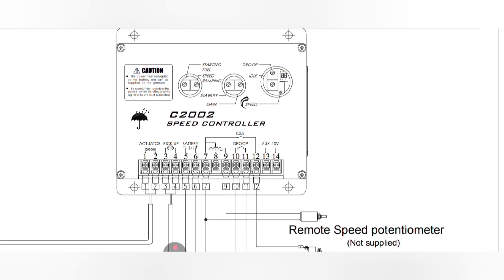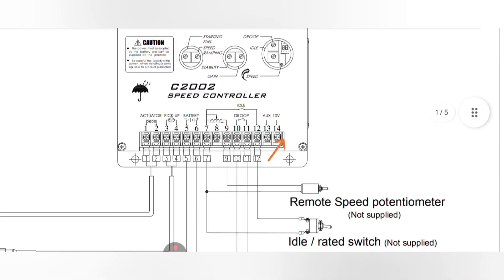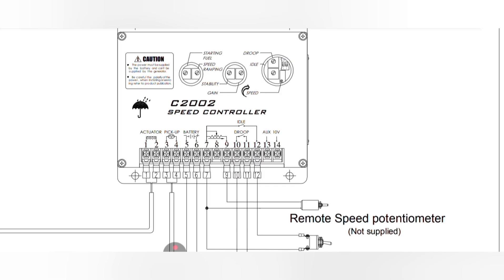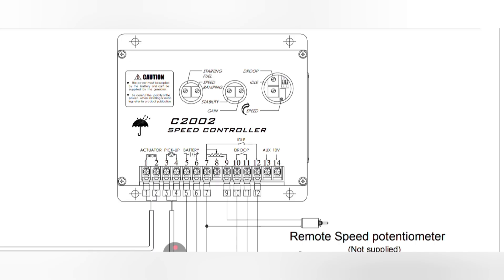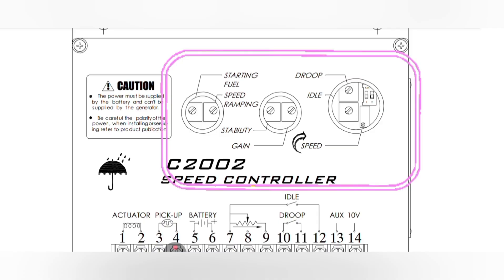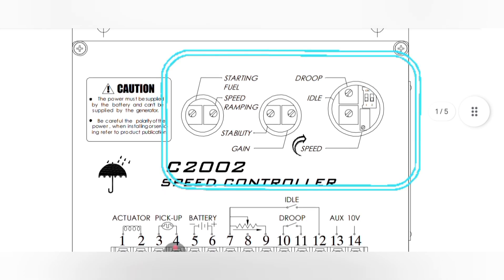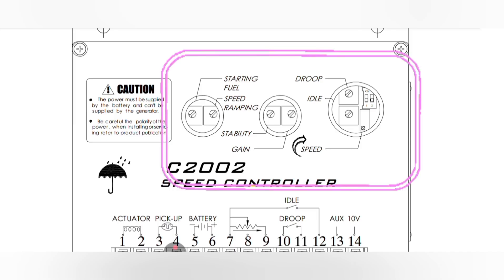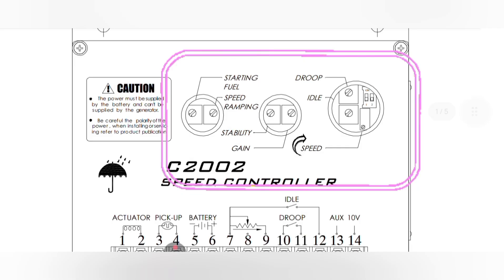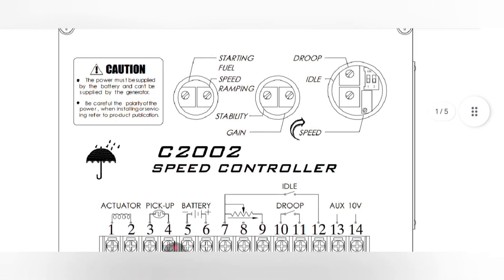Pins thirteen and fourteen are for the auxiliary connection — an extra connection that can be used for other purposes, providing a 10-volt DC output supply with an on/off switch. Moving to the adjustment setup: here we have starting fuel adjustment, speed ramping adjustment to control speed fluctuation, engine stability and governor stability, voltage gain, droop setting, idle speed, and direct engine speed increase/decrease — all adjustable via their respective potentiometers.